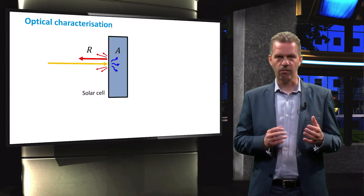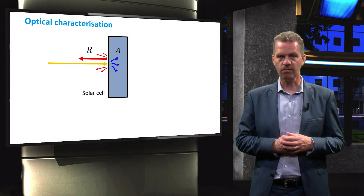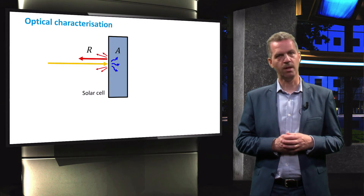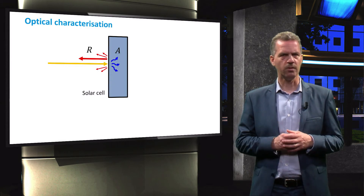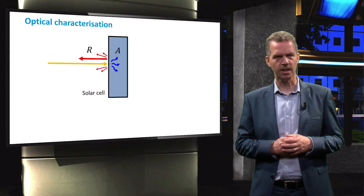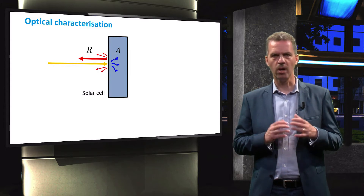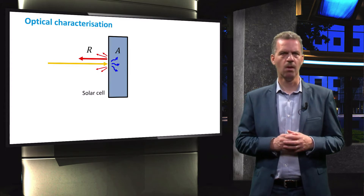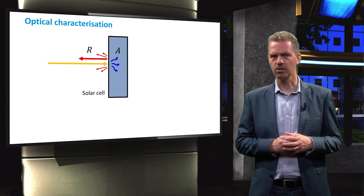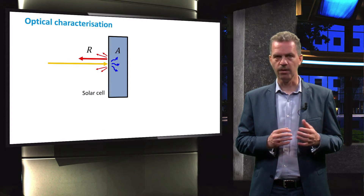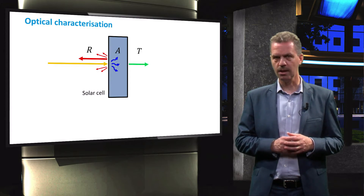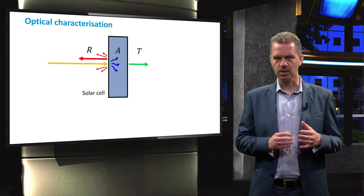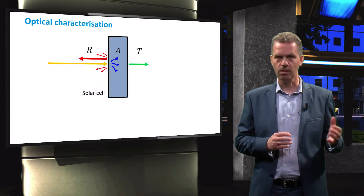The fraction of light that is coupled into the device can be absorbed. Since we want to generate as many free charge carriers as possible, we ultimately want this fraction of incoming light to be the largest. Finally, light that has not been absorbed in the solar cell can be transmitted through the back.